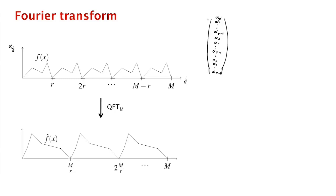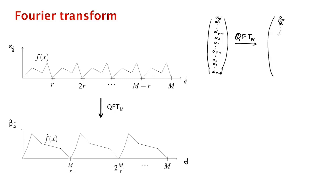Assuming r divides m, when we apply the quantum Fourier transform mod m, we get another periodic function. The output amplitudes beta_j are also periodic, but now with period m/r. So if we plot j versus beta_j, the pattern is beta-naught through beta_{m/r}, then beta-naught through beta_{m/r} repeating, and so on.